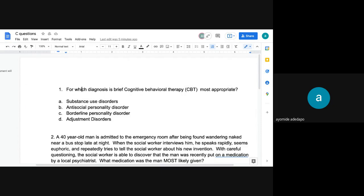So the first one, we have A, substance use disorder, B, antisocial personality disorder, C, borderline personality disorder, and D, adjustment disorders. So let's go to A, so substance use disorder.